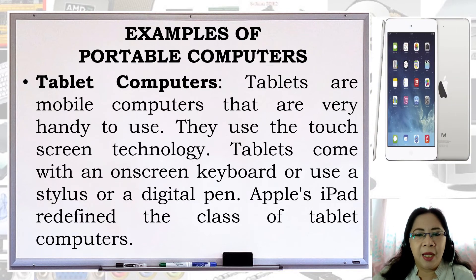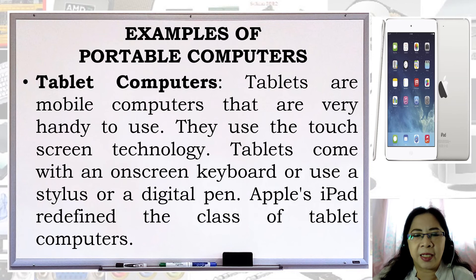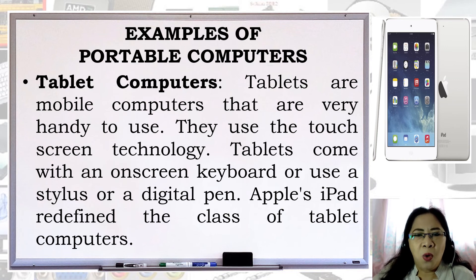Tablet computers: tablets are mobile computers that are very handy to use. They use touch screen technology and come with an on-screen keyboard or use a stylus or digital pen. Apple's iPad redefined the class of tablet computers. There are two kinds of tablets: tablets with an Android operating system manufactured by different companies like Samsung, Huawei, and Cherry Mobile, and tablets with an iOS operating system manufactured by Apple, commonly known as iPad.